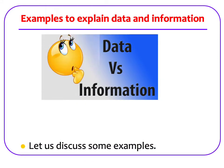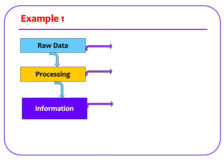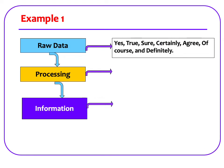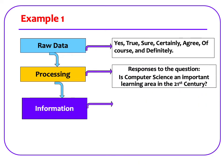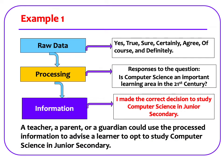Let us discuss some examples. We will explain how the data could be processed to make it meaningful to the user. Yes, true, sure, certainly, agree, of course, and definitely are examples of raw data. These could be responses to the following question: Is computer science an important learning area in the 21st century? The above responses could have been obtained from students who are studying computer science. The information that can be gathered from these responses is the fact that the decision to study computer science would be an important decision. A teacher, a parent, or a guardian could use this information to advise a learner to opt to study computer science in junior secondary.